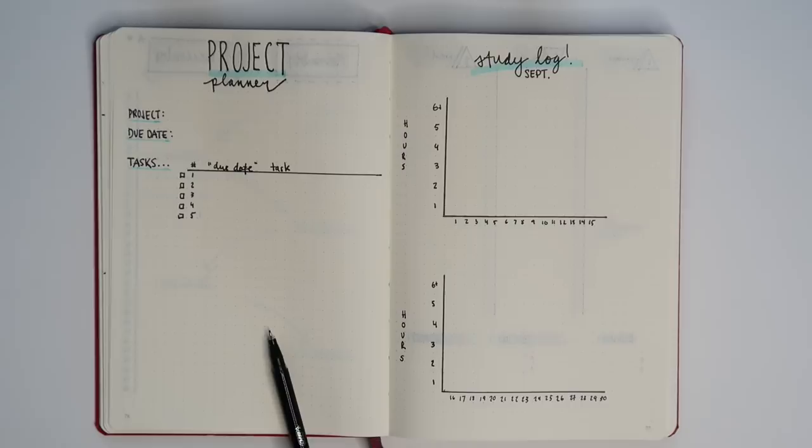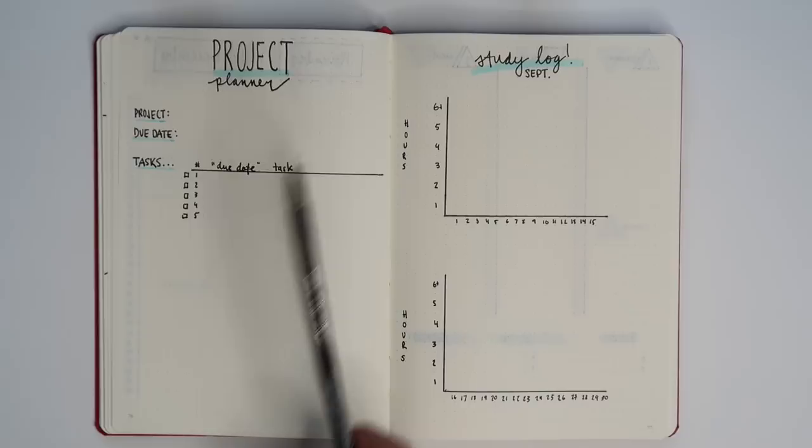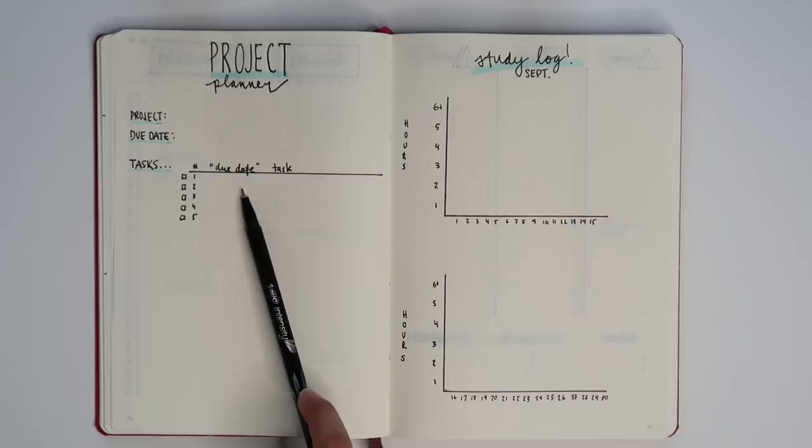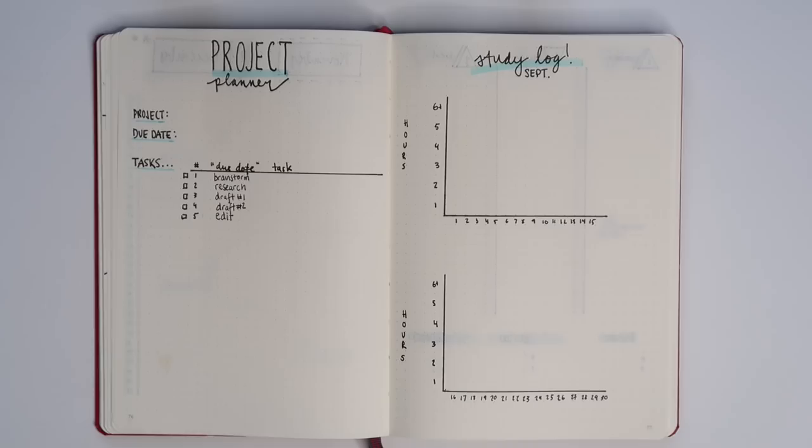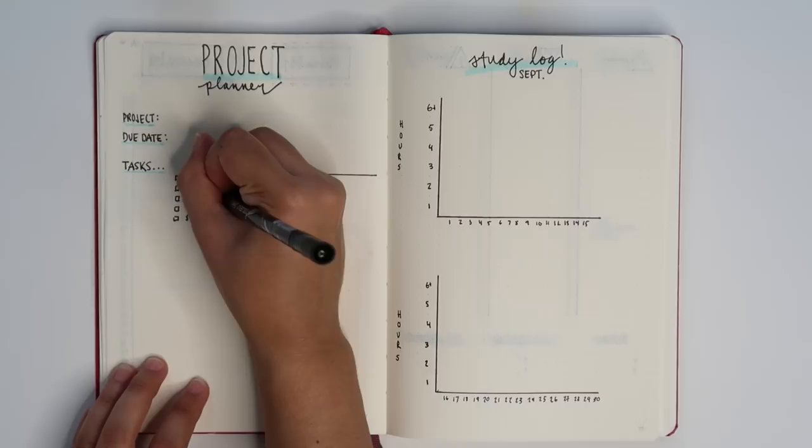At the beginning of a project you'd figure out all the tasks that you need to do to complete the project and assign many due dates for each task. I put due date in quotation marks because obviously it's not an official due date. Oh my goodness I just wrote the task section under the due date column. See I make mistakes too, it happens.